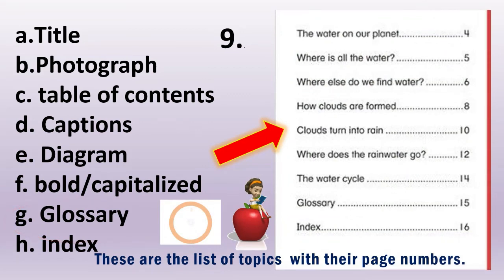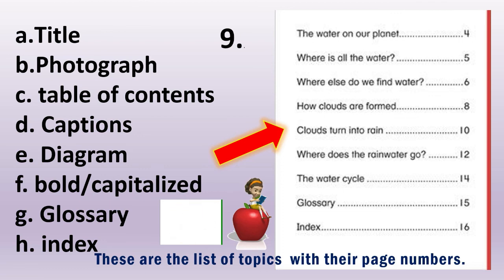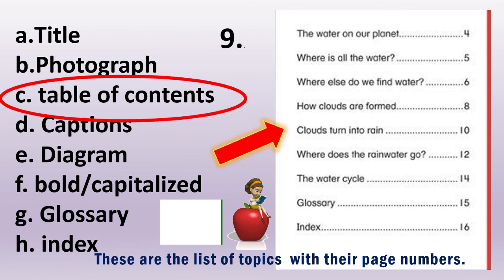And for number 9, what feature of informational text is this? These are the list of topics with their page numbers. The answer is letter C — Table of Contents.